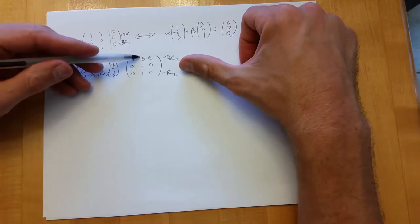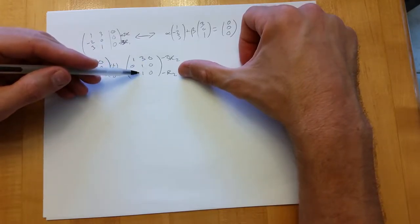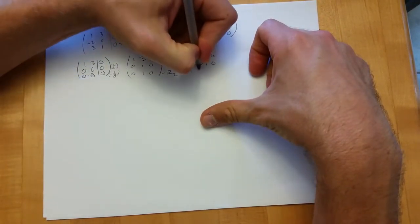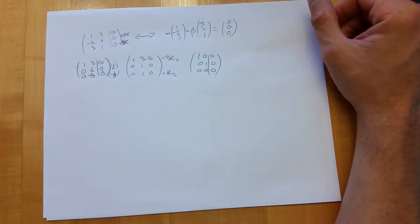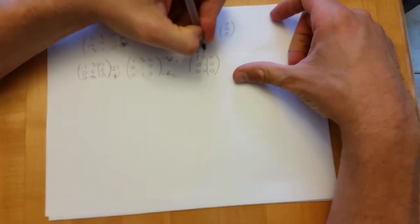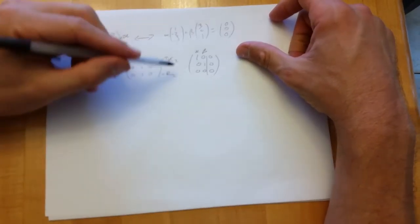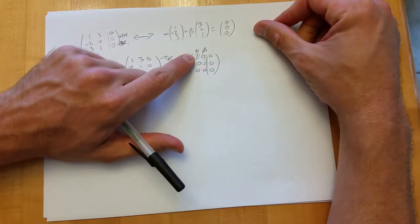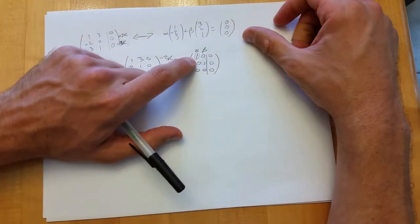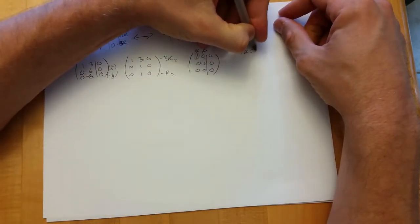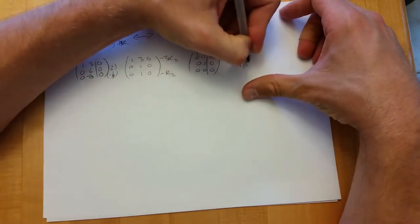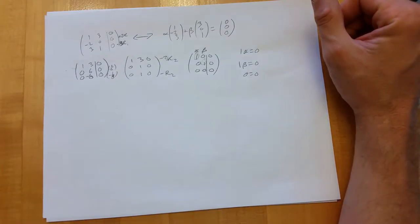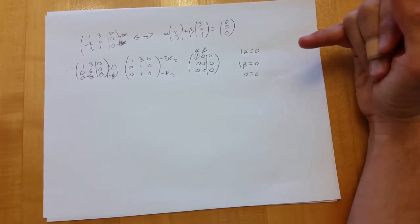Now I'll use row two to knock out what's above and below it — minus three times row two knocks out the top middle entry, and minus row two knocks out the last one. After reduction, we have the alpha and beta columns with no free variables. The first equation says alpha equals zero, and the second says beta equals zero. The third equation gives zero equals zero, which provides no information.